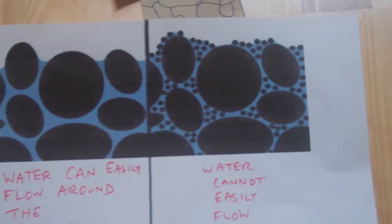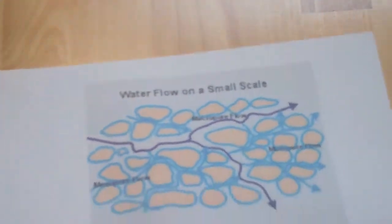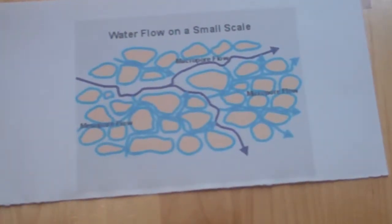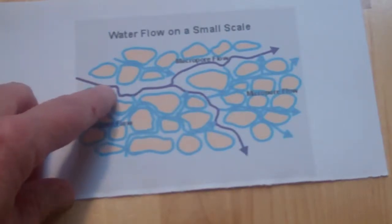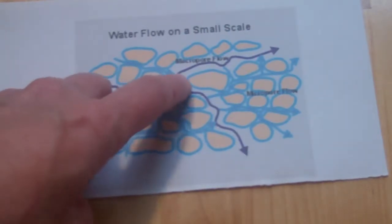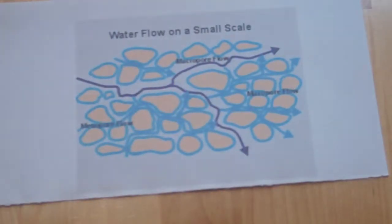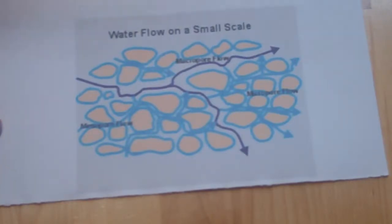This diagram shows an arrow with lots of free-flowing water — lots of water can flow there, so that's very permeable. Flowing through the pore spaces means it's permeable.